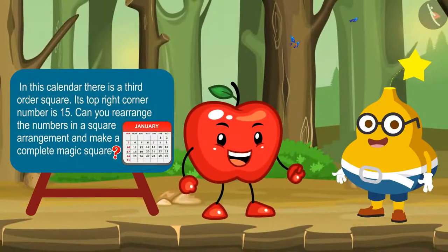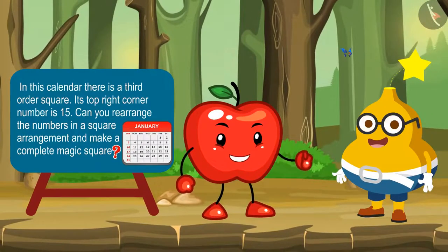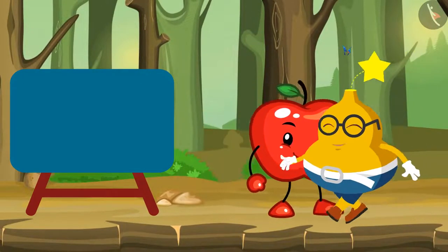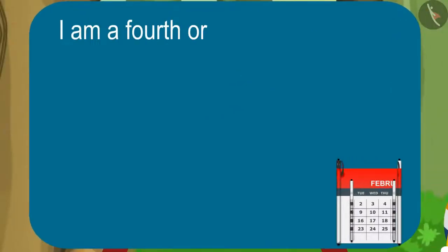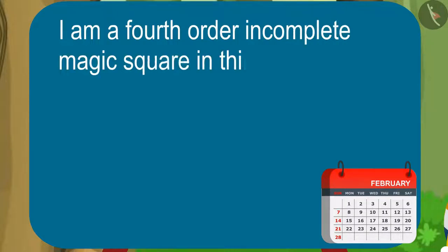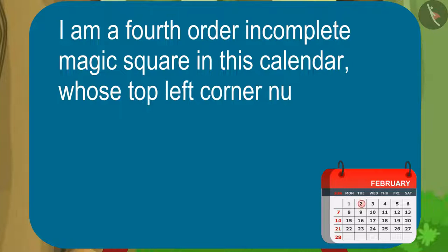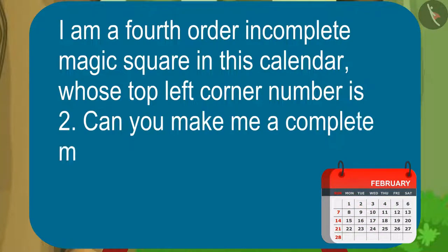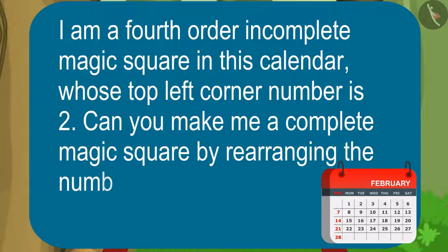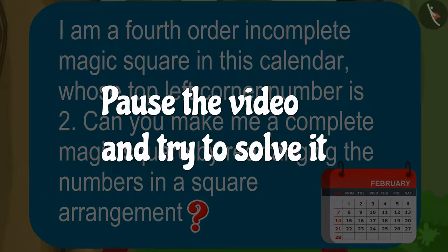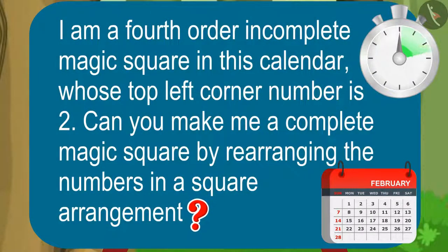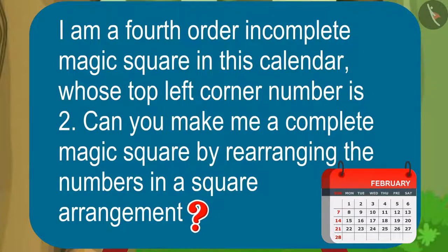Appy says: Wow, you are so brilliant! Now it's your turn to ask me the puzzle. Fruity says: Yes, and the puzzle is — I am a fourth order incomplete magic square in this calendar whose top left corner number is 2. Can you make me a complete magic square by rearranging the numbers in a square arrangement?